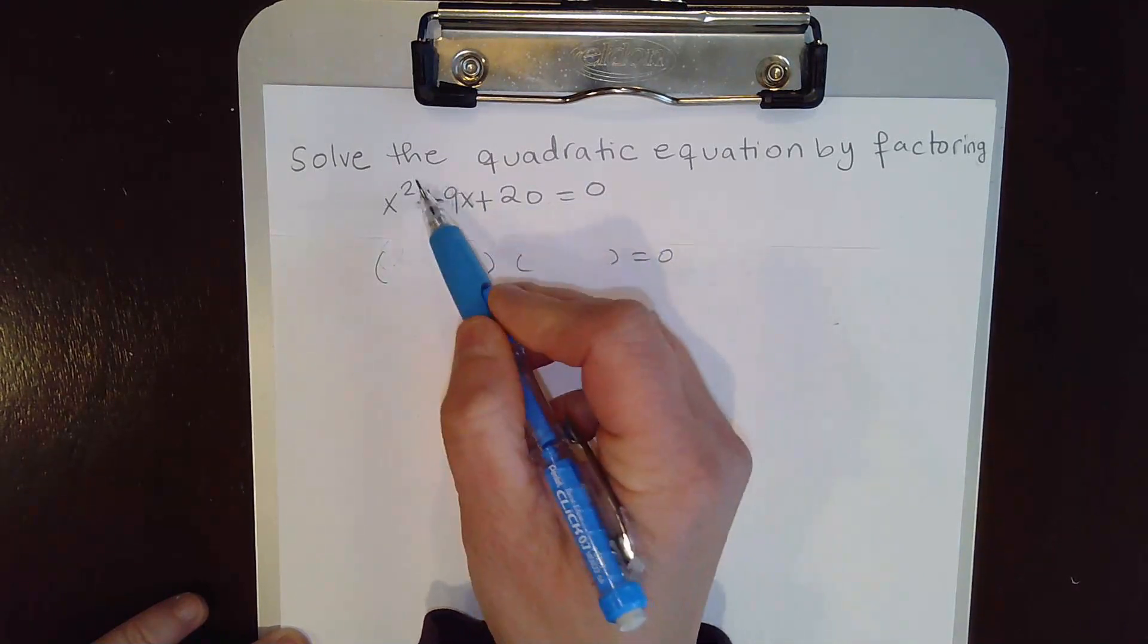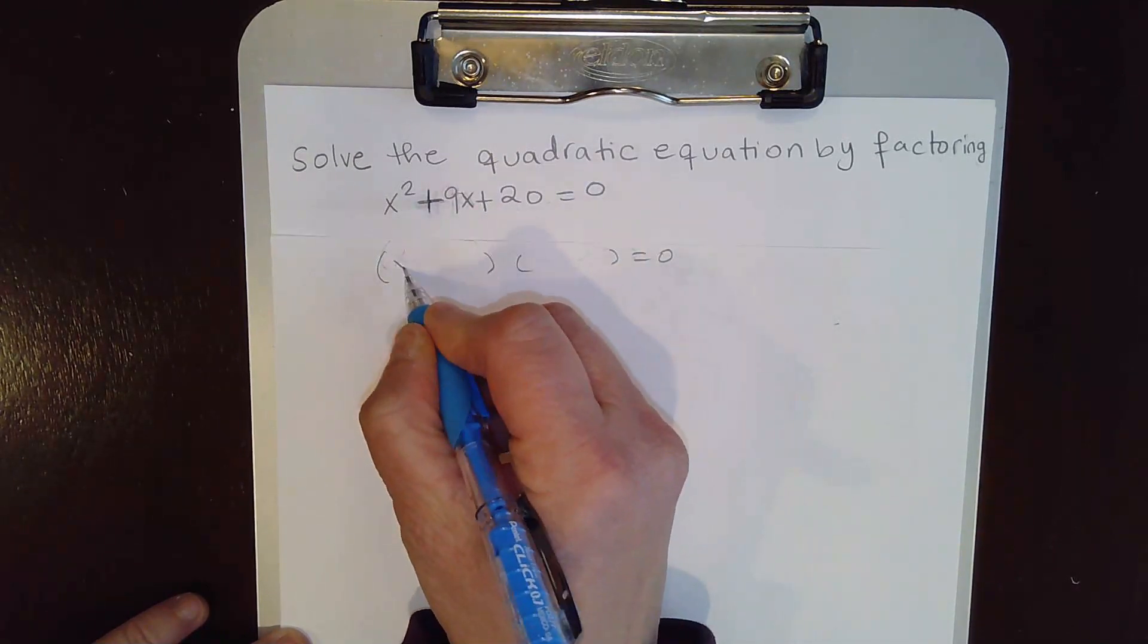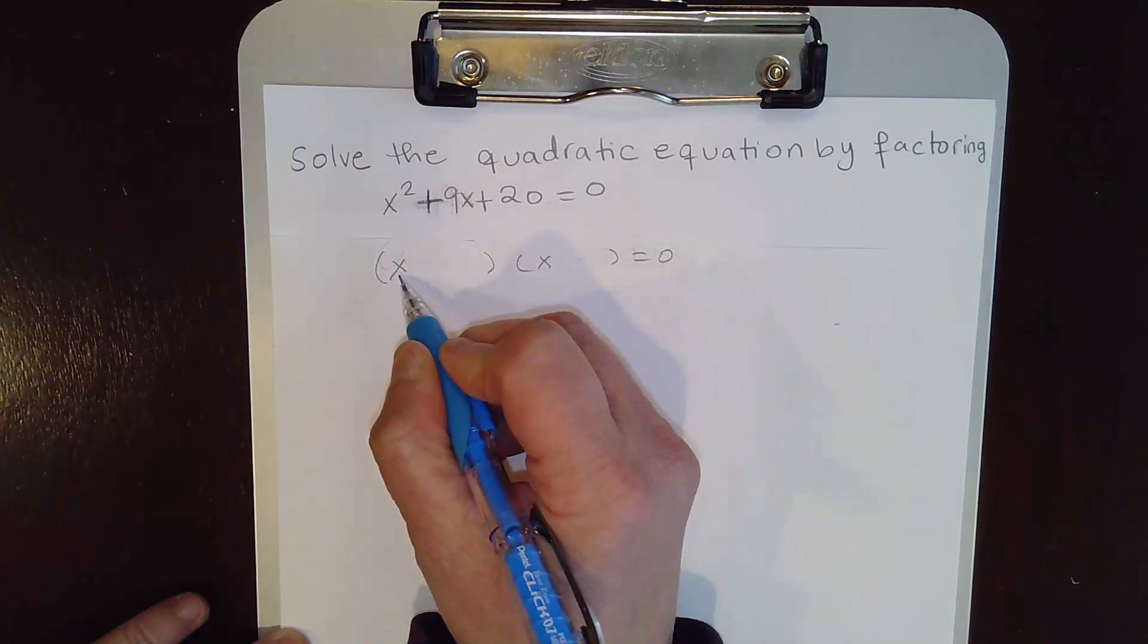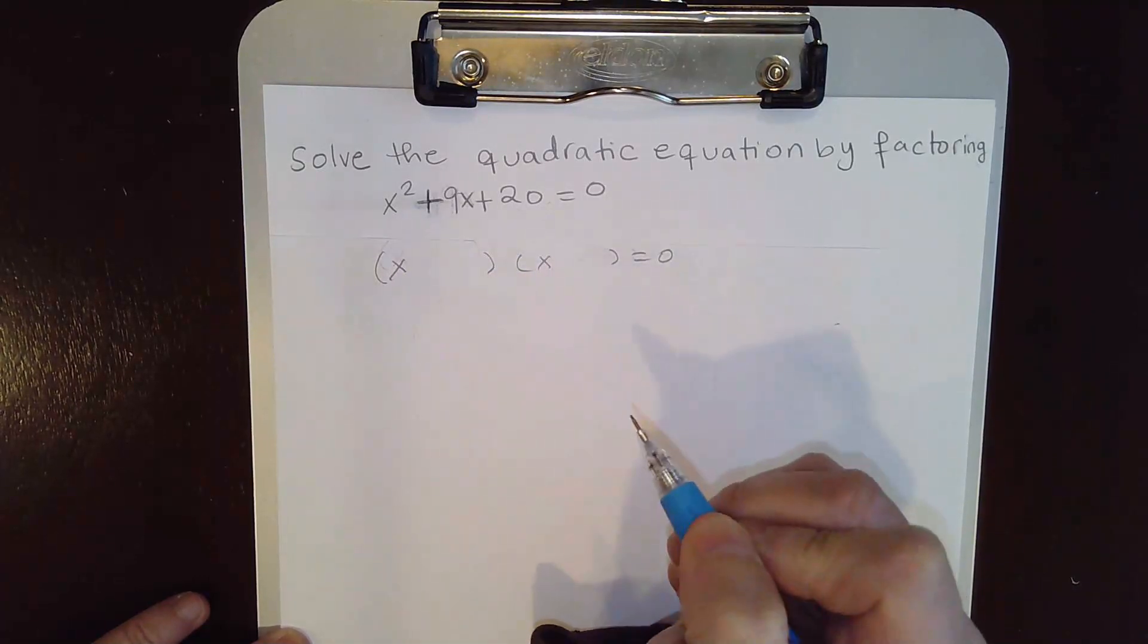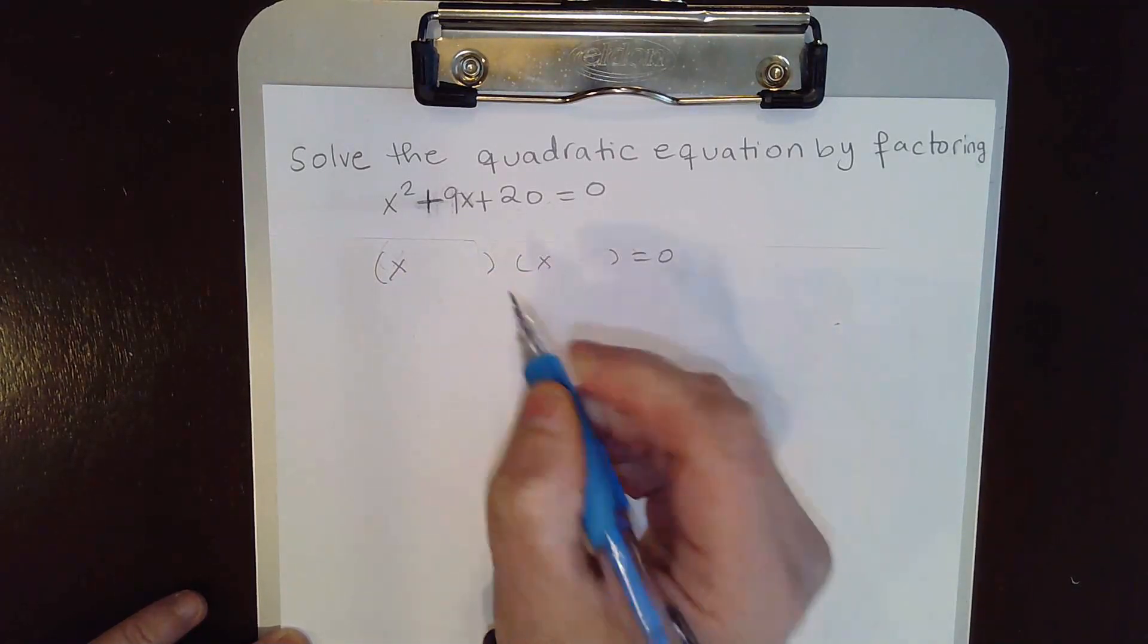To get x², we put x and x here. When you do FOIL, you get x times x which is x². Now you need to find two numbers whose product is positive 20 and whose sum is positive 9.